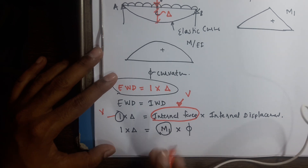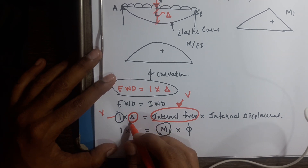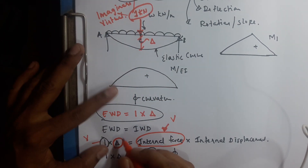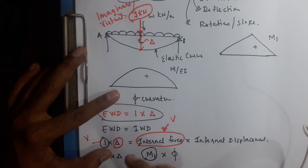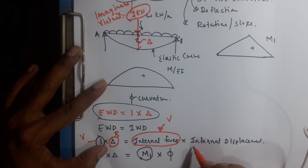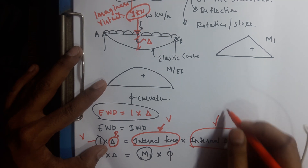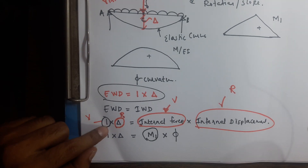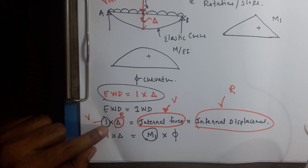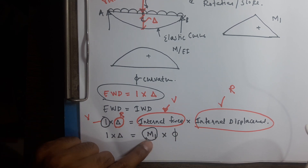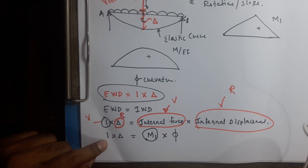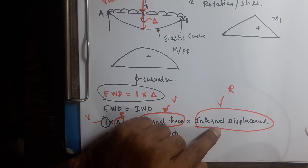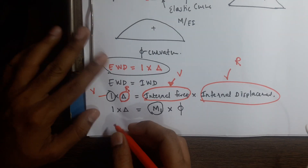This delta is real — because of UDL you are getting this delta. Since external displacement is real, internal displacement will also be real. So to summarize: external force is virtual, internal force m1 is also virtual (developed by unit load); external displacement is real, internal displacement is also real. Now we can get the formula.